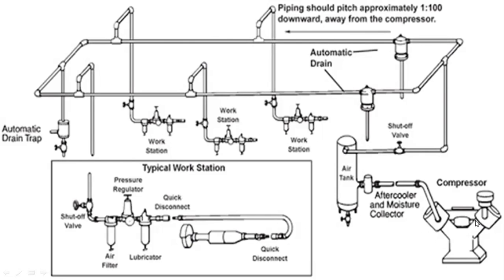In the entire process plant, we have pipelines running all around with different workstations connected through the ring main system. In this typical layout, we have a two-stage compressor, an aftercooler going to an air reservoir tank, shutoff valves at different stages, connection to the ring main, and automatic drain pipes to remove moisture from the air. From this workstation, you can use it for different kinds of pneumatic tools, instrument systems, control actuators — all tapping air from the ring main spread throughout the length and breadth of any process plant.